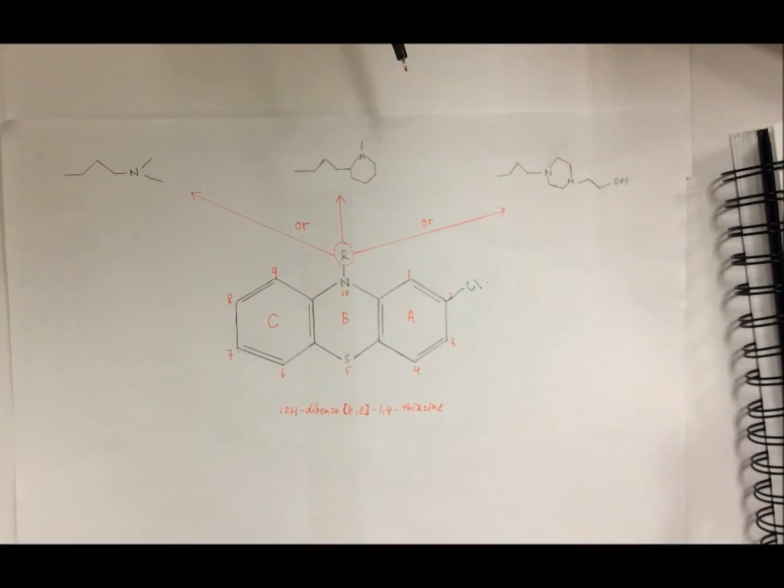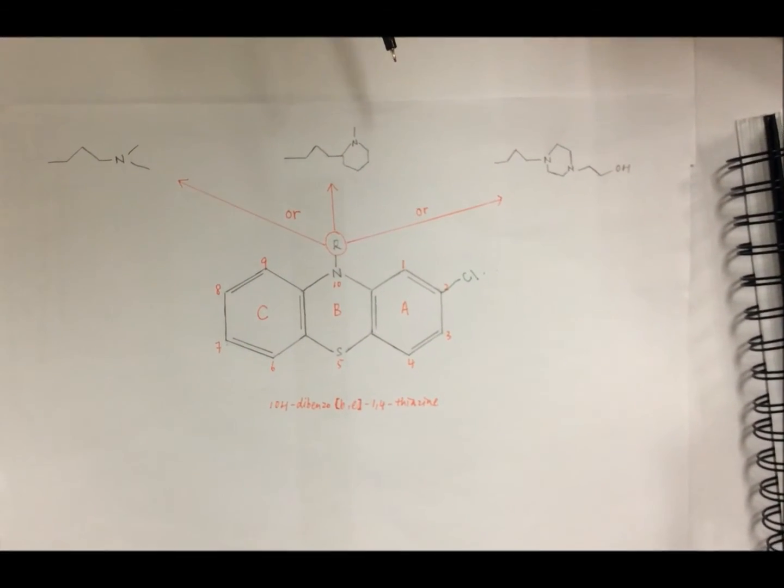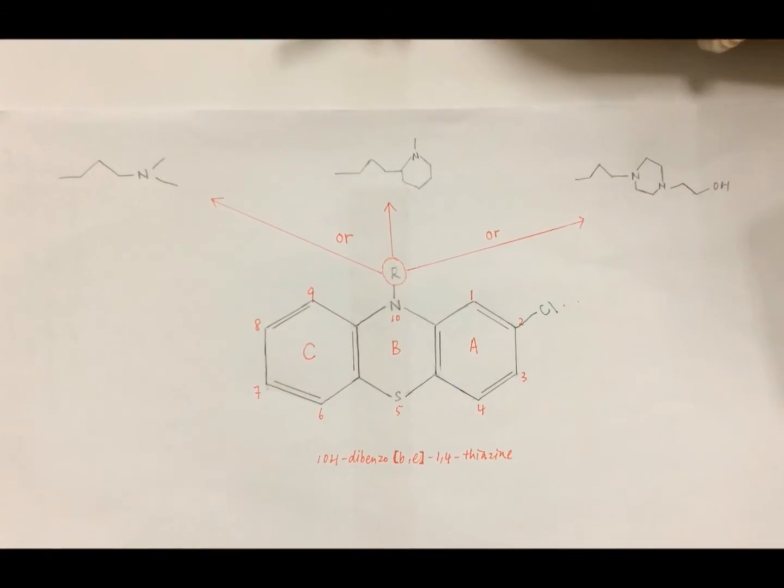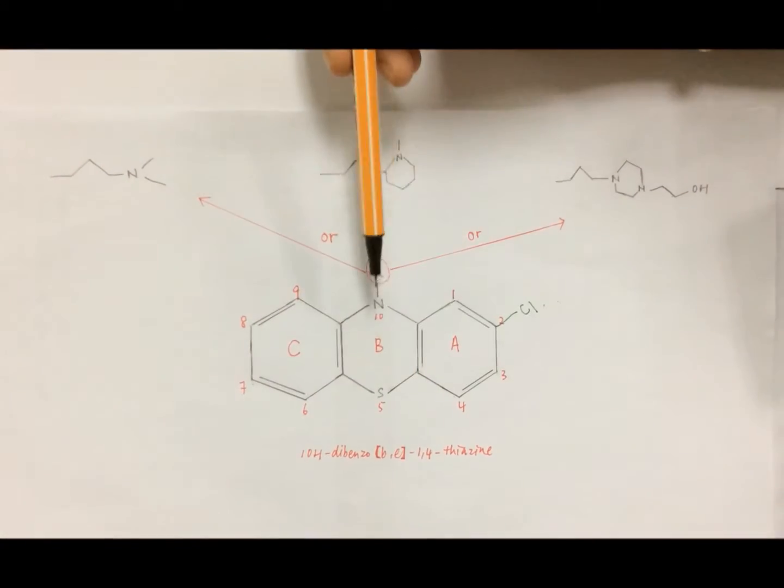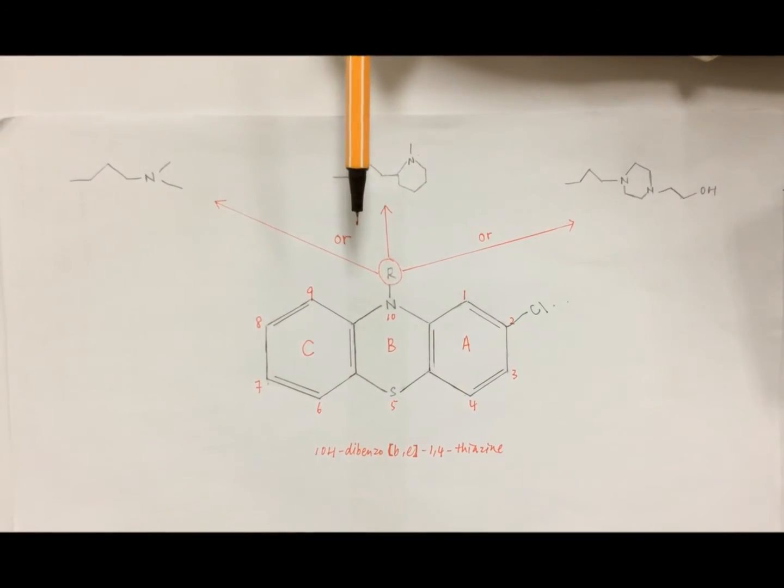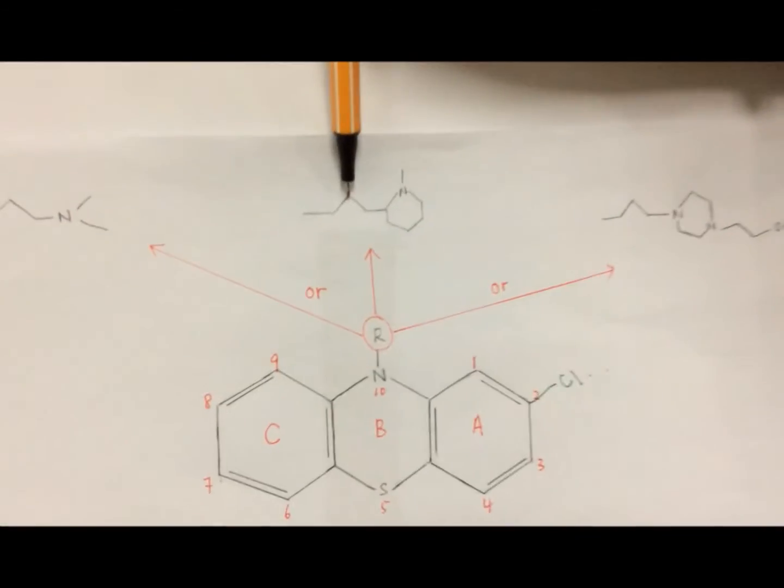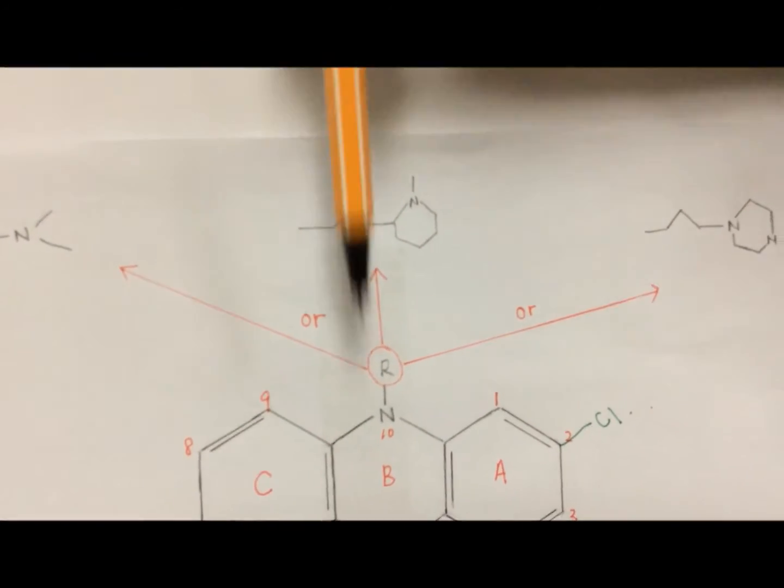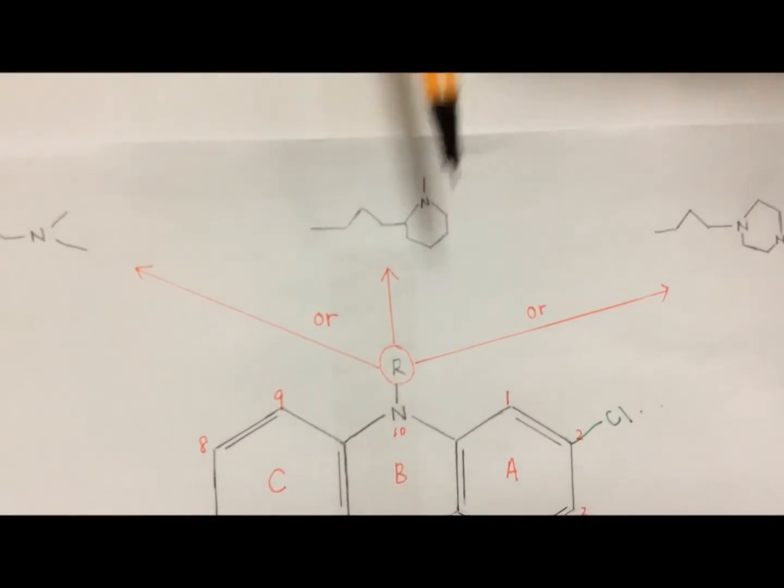...indicates an important structural feature of such molecules. Another major requirement for particular potency of phenothiazine is that the side chain amine must contain three carbons separating the two nitrogen atoms.